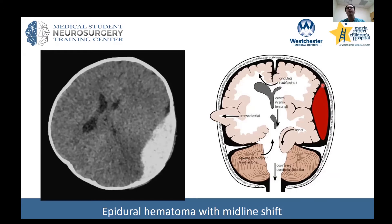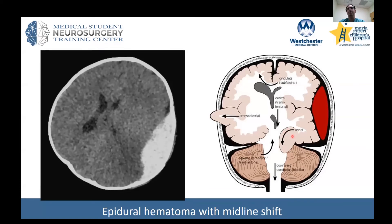This diagram shows a collection of blood — most likely an epidural hematoma. 'Epi' means above, and the dura is the covering of the brain, so this bleeding occurs outside the dura. It usually occurs in the setting of skull fractures, and commonly the middle meningeal artery is the vessel affected. The diagram nicely shows some of the manifestations of mass effect.